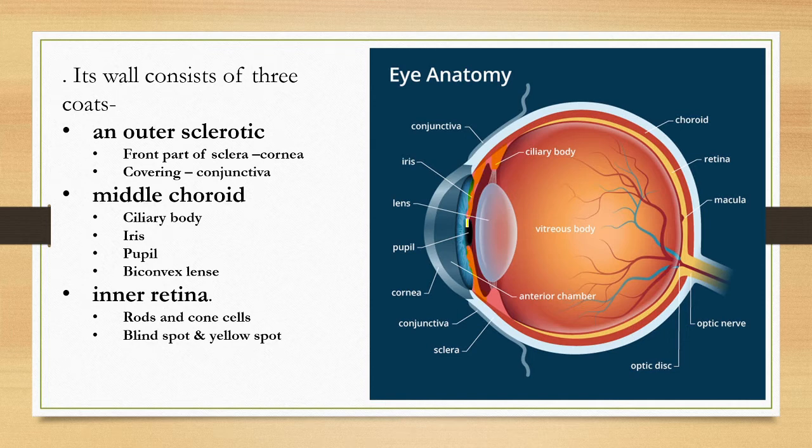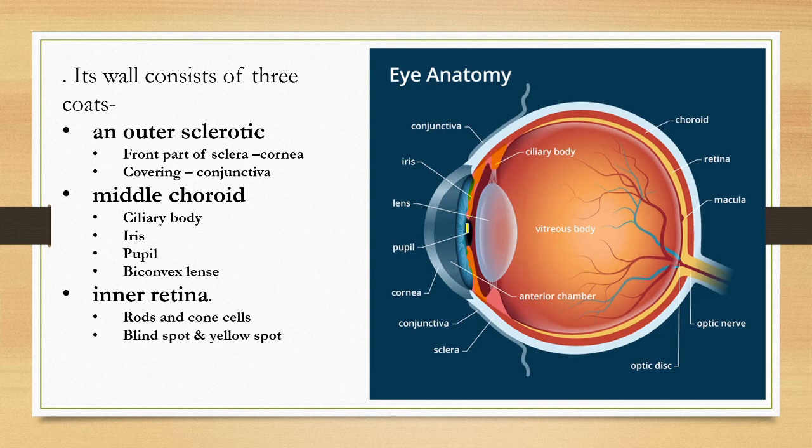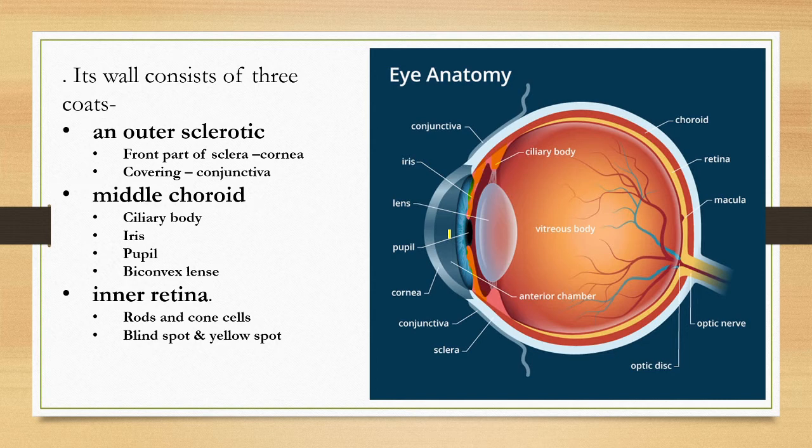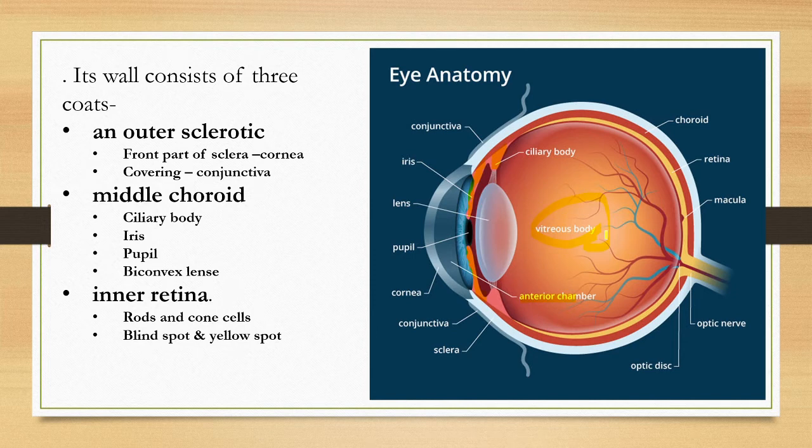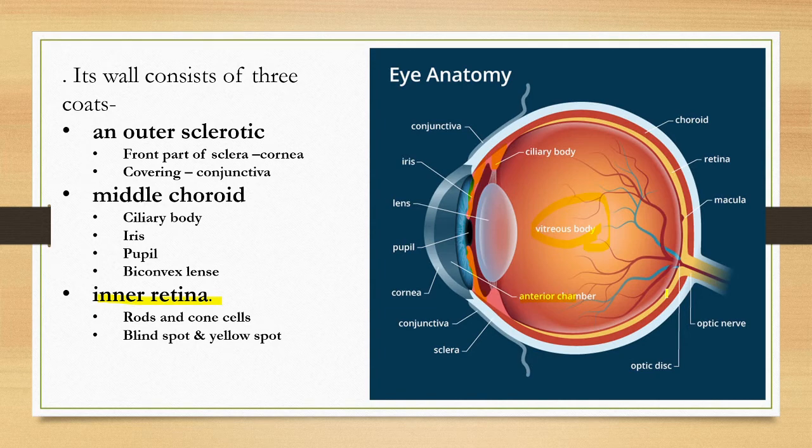It has a central opening called the pupil. This opening is called the pupil. The pupil opening can be controlled by the contraction and relaxation of the iris muscles. Just behind the pupil there is a biconvex lens. There are two chambers: the anterior and the posterior chamber filled with aqueous humor and vitreous humor. Both these fluids maintain the shape and pressure inside the eyeball.